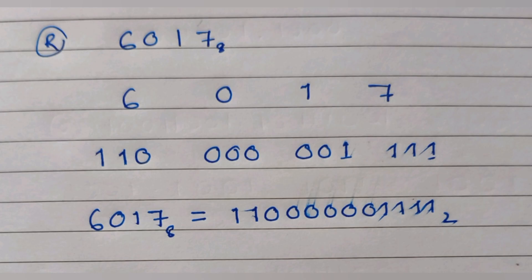This is the last sum of the chapter. The number is 60178 in octal, and we have to convert it into binary. We divide each octal digit by 2 and write the binary equivalent in groups of three digits. 6 in binary is 110, 0 in binary is written as three zeros (000), 1 in binary is written with two extra zeros as 001, and 7 in binary is 111. Finally we write all the ones and zeros together to get the final answer.